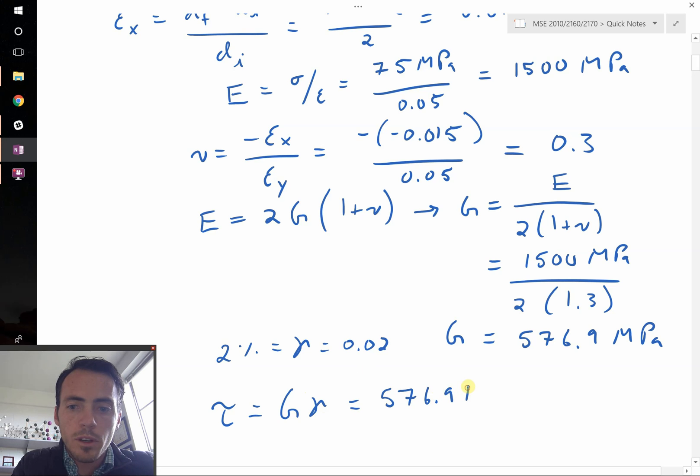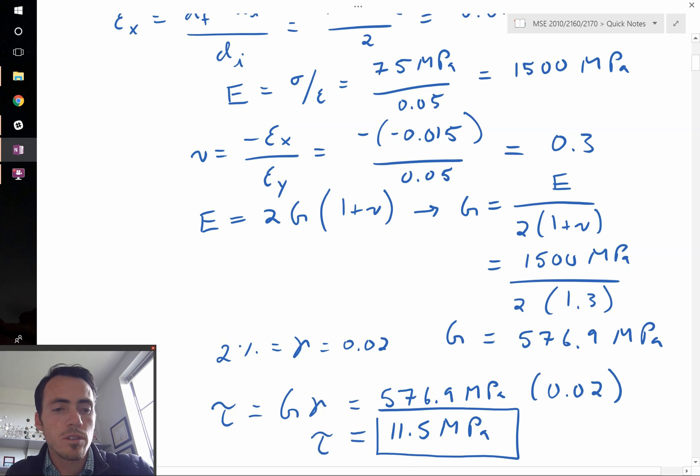576.9 megapascals multiplied by 0.02 as our shear strain will tell us exactly what shear stress it takes. And when I punch those into my calculator, I get 11.5 megapascals as the shear stress it takes to achieve that shear strain.